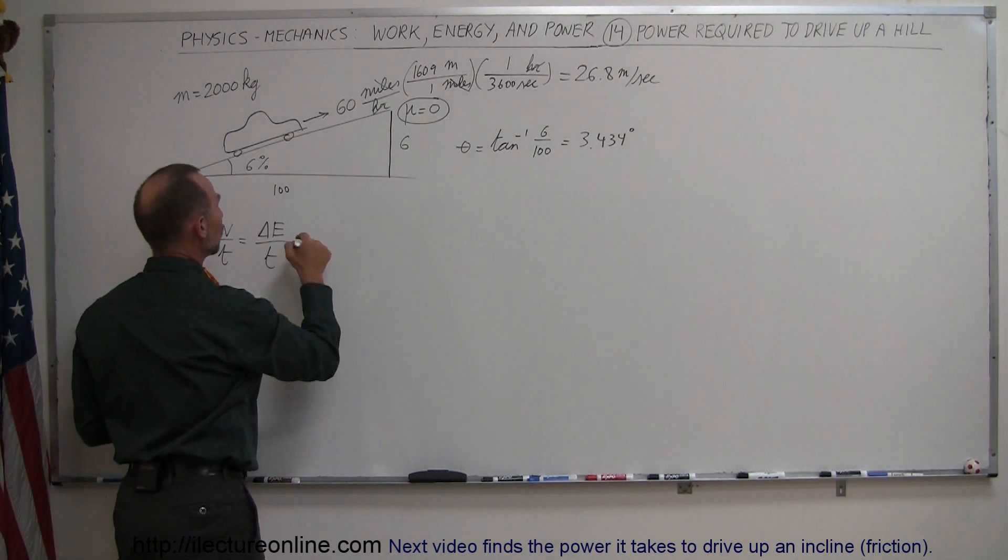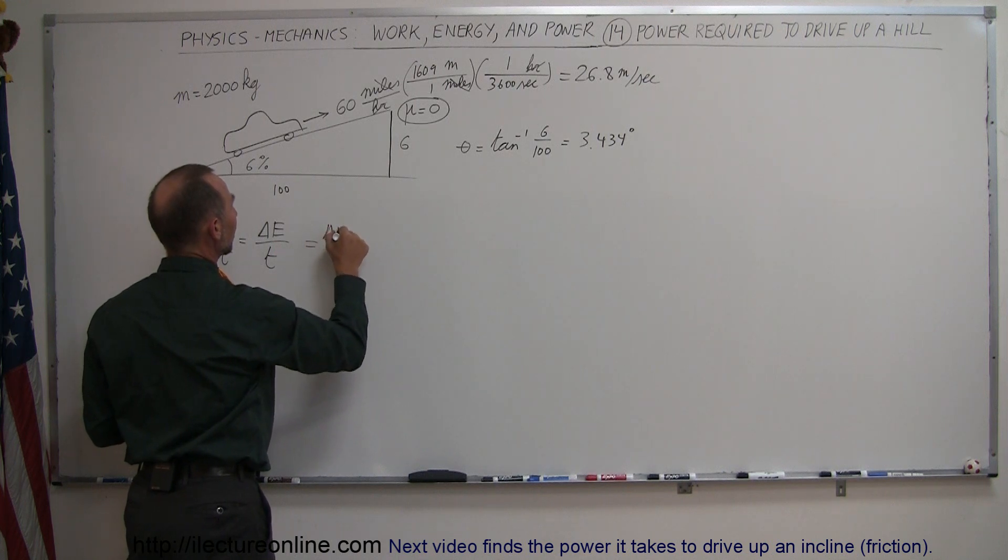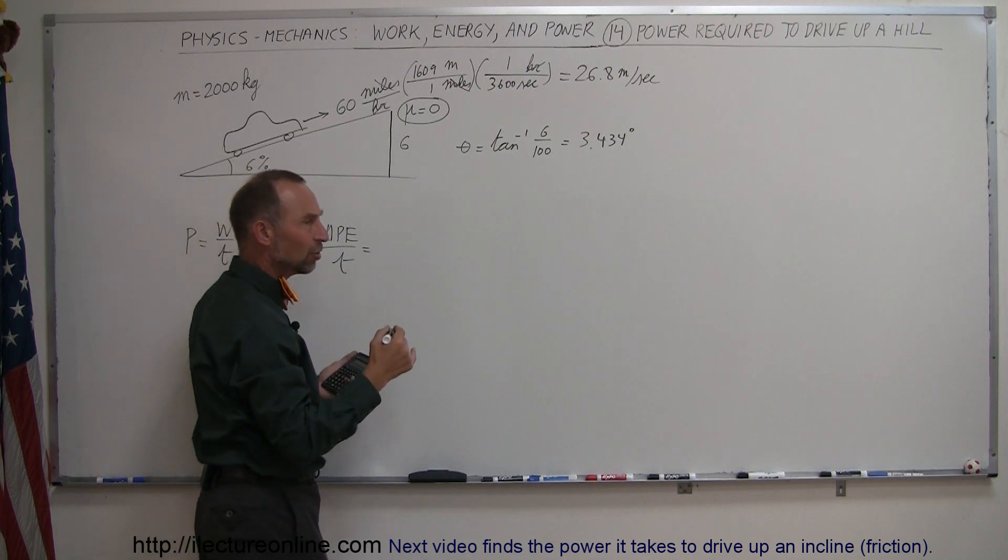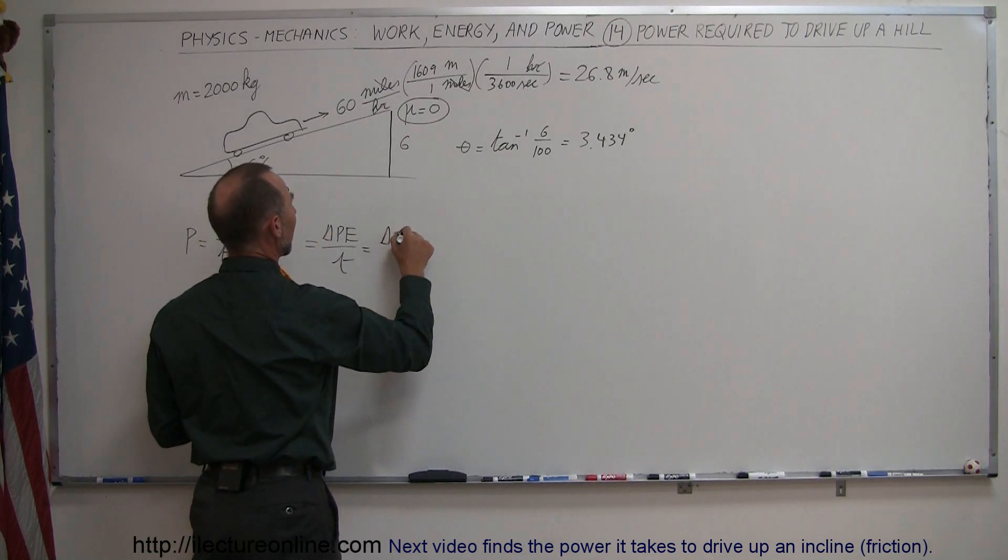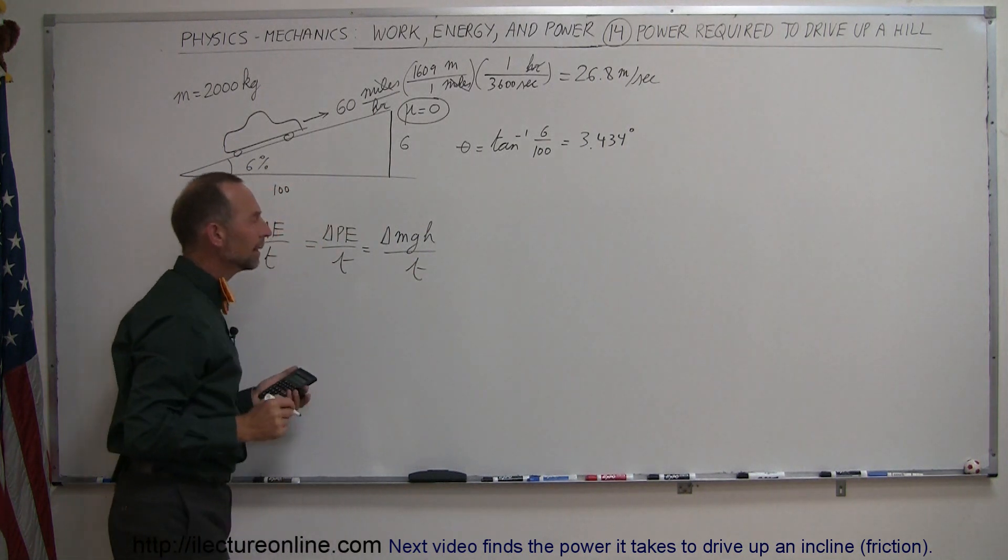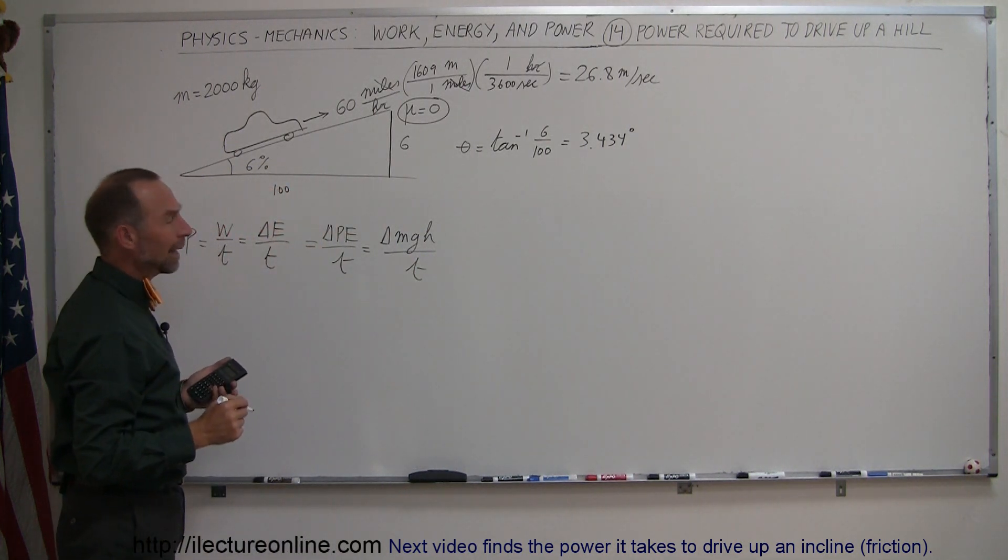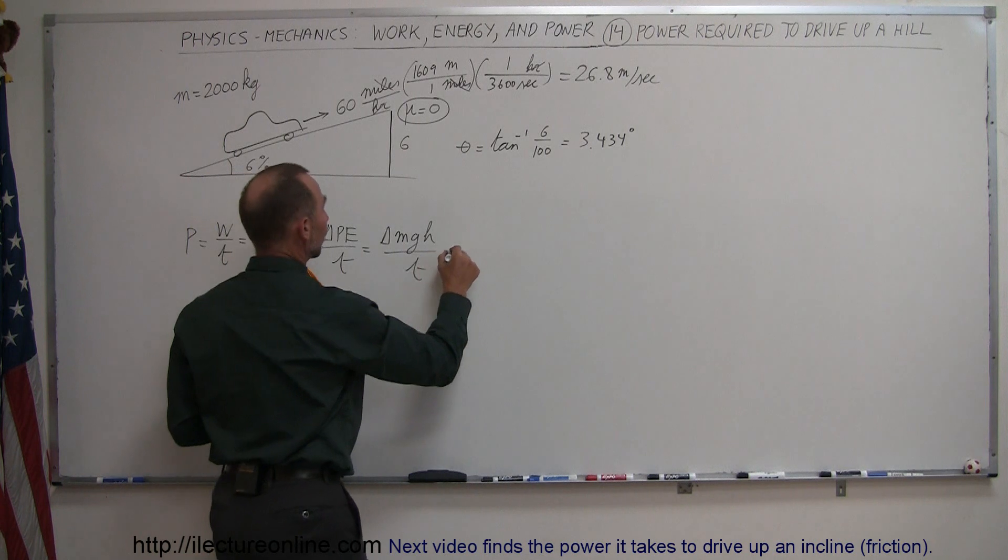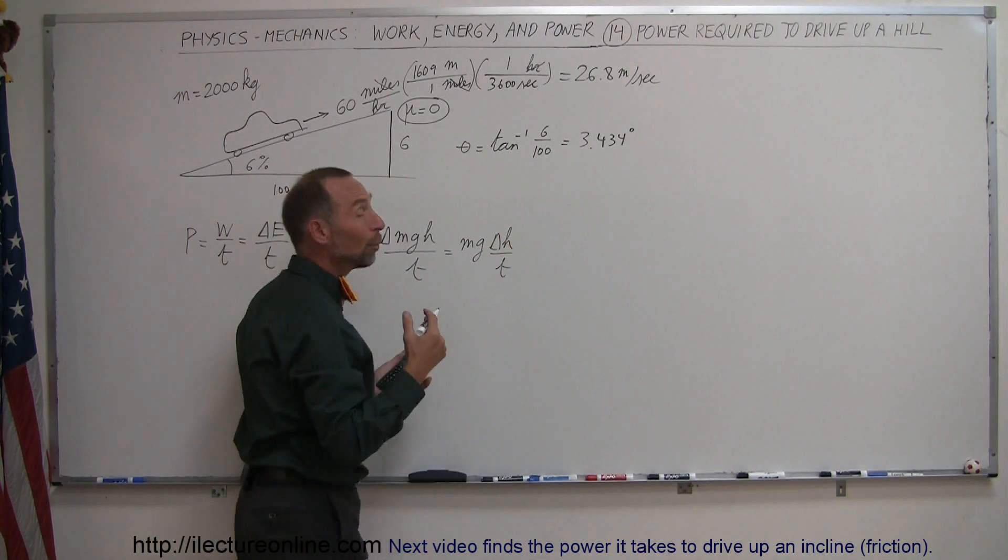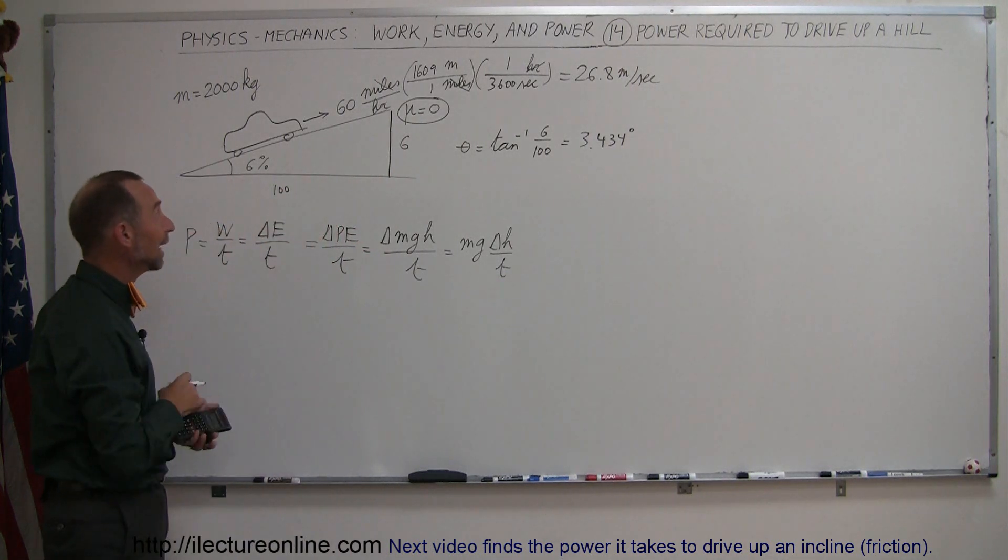But the car is gaining height, so the energy increase is the potential energy increase of the car. So we can say that the change in energy is equal to the change in potential energy over time. And potential energy is of course MGH, so it's equal to the change in MGH over time. MG is constant, so this is equal to MG times the change in the height over time. So that would be the rate at which the car is gaining height.